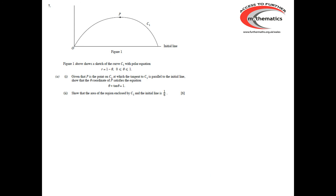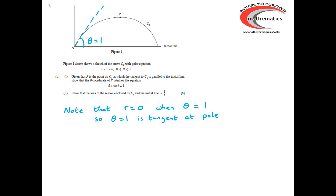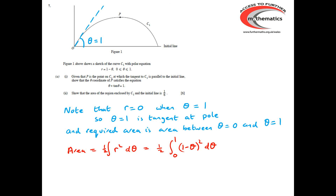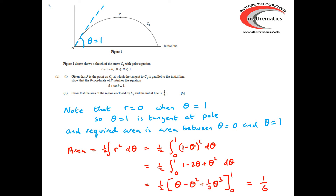The question asks us to show that the area enclosed by C₁ and the initial line is 1/6. We notice that r = 0 when θ = 1, so θ = 1 is a tangent at the pole, and the area is between θ = 0 and θ = 1. The area is ½ ∫₀¹ (1 − θ)² dθ. Expanding, integrating, and substituting the limits gives 1/6 fairly quickly.